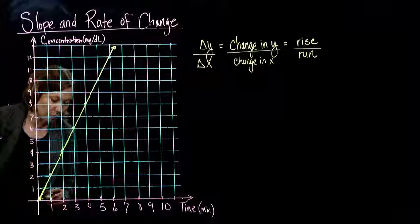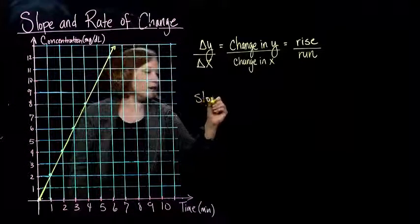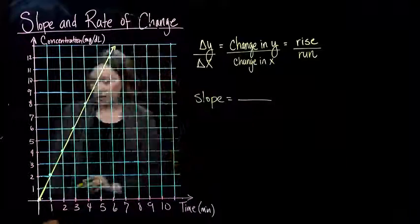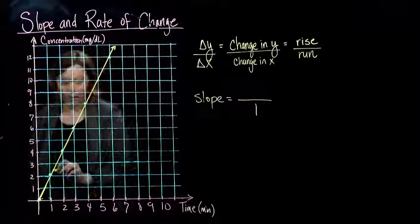My run, my change in my x, so the slope for our graph, the change in the x—for each one we go over, we go up 2.